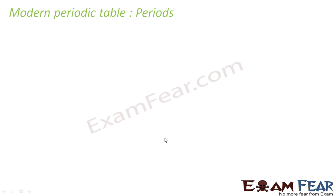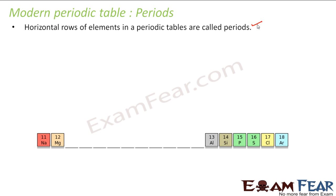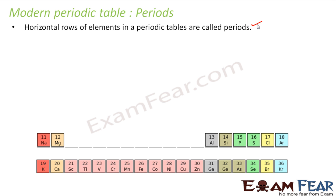As I told, modern periodic table has periods and groups. Let's understand the periods in detail. Horizontal rows of elements in a periodic table are called periods. For example, this is one period, this is another period.